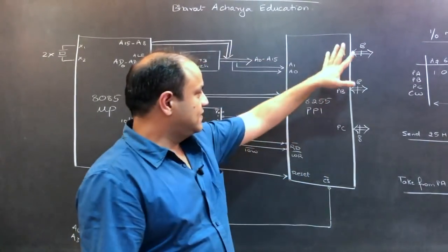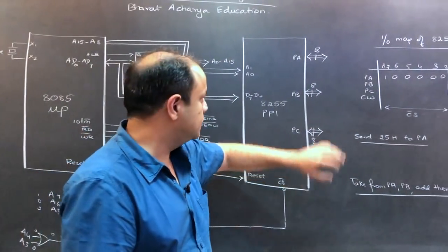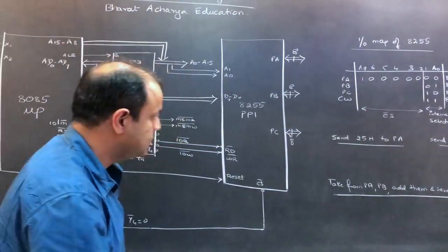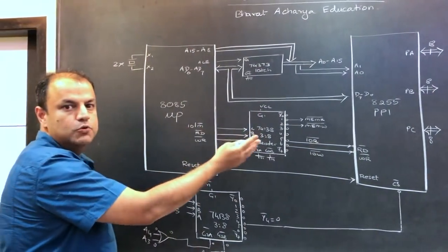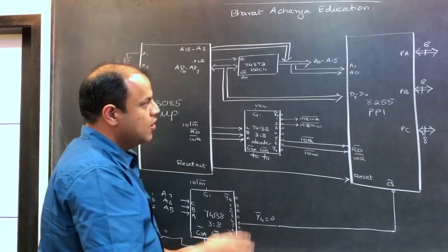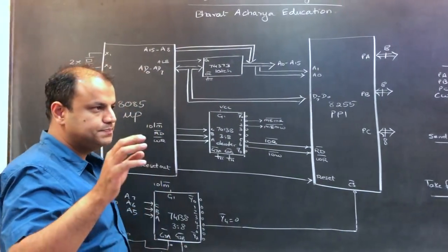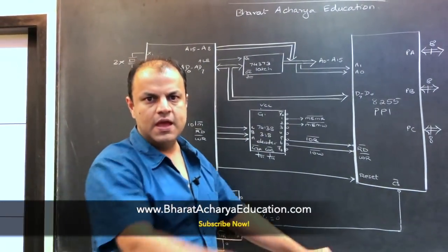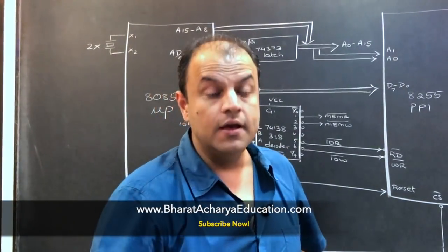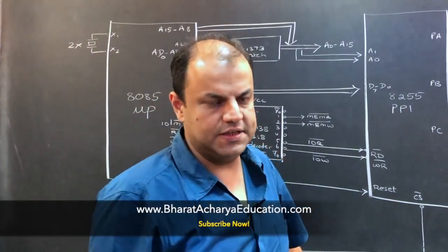So on this side, 8255 has three ports. To these ports, you connect IO devices. On this side, it's the MUP, the microprocessor. Now, what are the connections that you need? When I do this diagram in a classroom lecture, I don't make the diagram and then explain it. I make it along with the explanation.